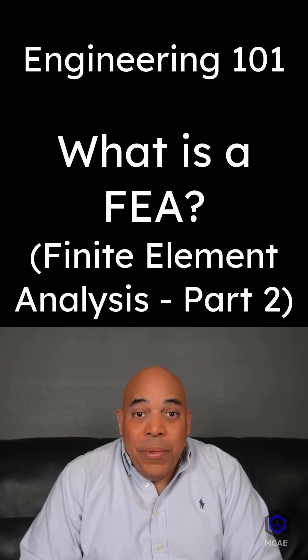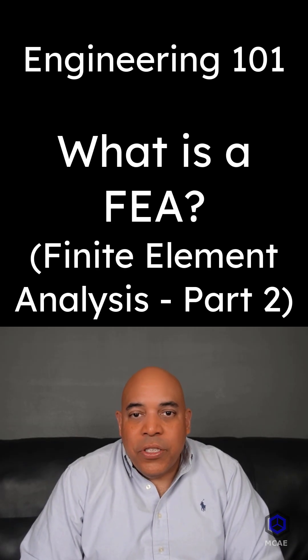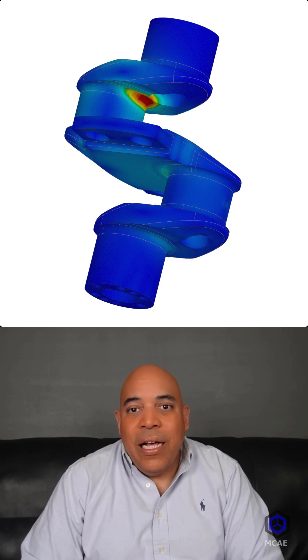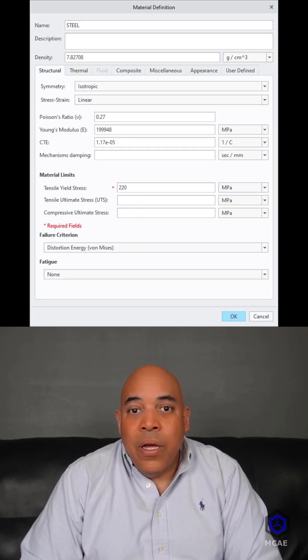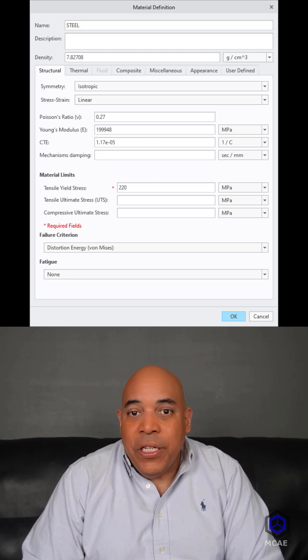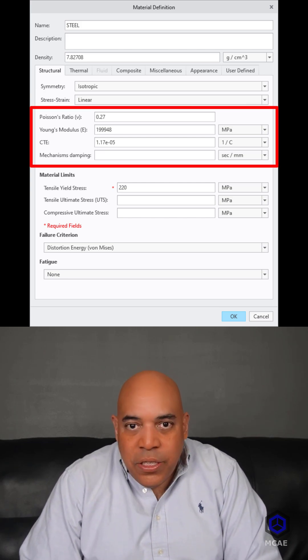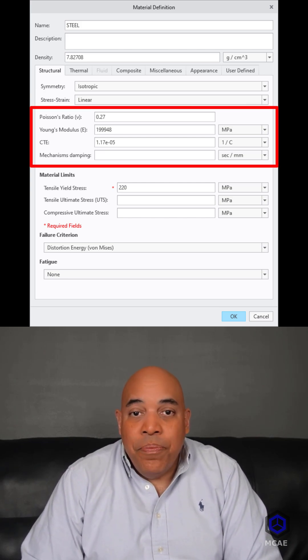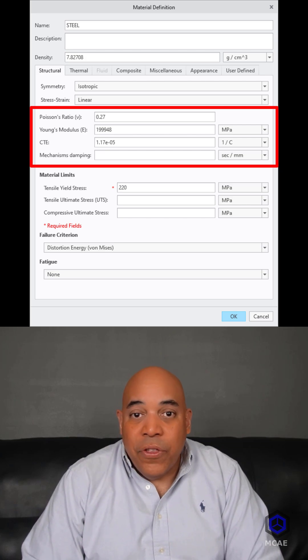Besides the mesh, other required parts of a finite element analysis include materials and their properties like Young's modulus, Poisson's ratio, and the coefficient of thermal expansion.